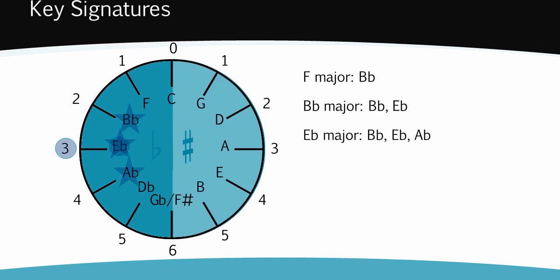Can you see which flats A flat major has? B flat, E flat, A flat and D flat. The order of flats is also right here in the circle of fifths.